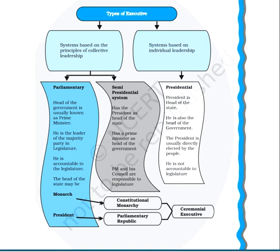The next type is the semi-presidential system, found mainly in France, Russia, and Sri Lanka. It has a president as head of state, while the prime minister and his council are responsible to the legislature. The third type is the presidential form of executive, found mainly in the USA, Brazil, and Latin America. In the presidential system, the president is the head of state and is usually directly elected by the people.